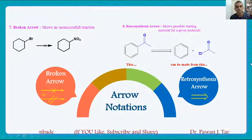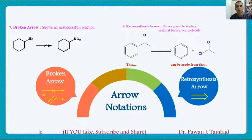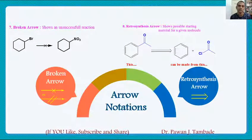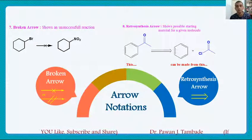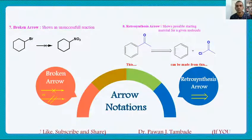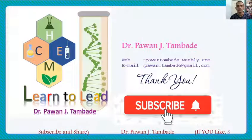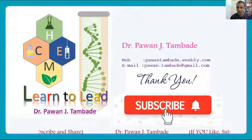These are the different arrow notations which we normally encounter in organic chemistry reference books or research articles. I hope you learned something new in this video lecture. Thank you for watching.